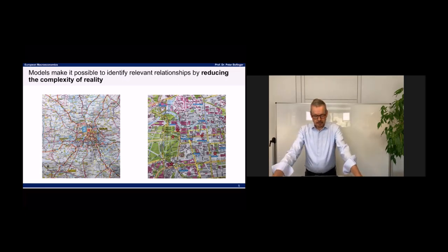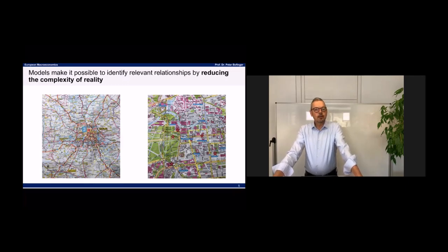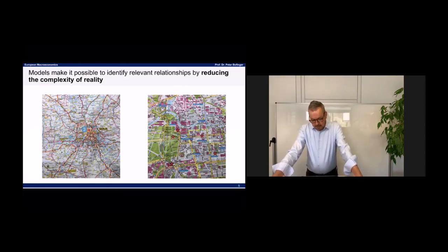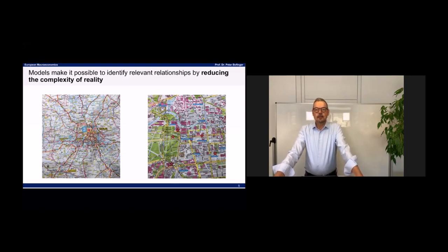The question of whether a model is good or bad depends really on what you want to do with it. The map on the left is very good if you're driving and want to find your way into the city of Berlin, while the map on the right is the right one if you arrive at the main station and want to go to Unter den Linden or Friedrichstraße. So it's not about bad or true models — it really depends on the purpose you want to achieve.